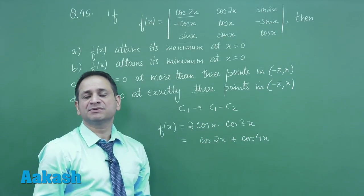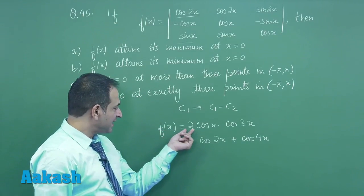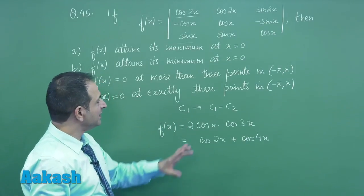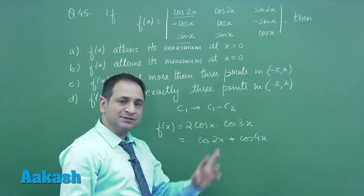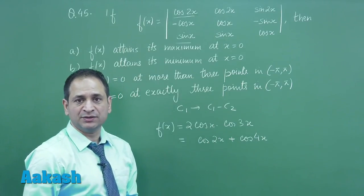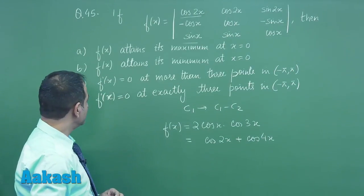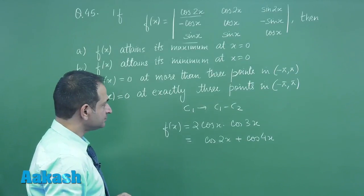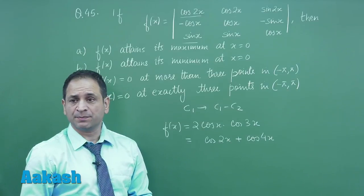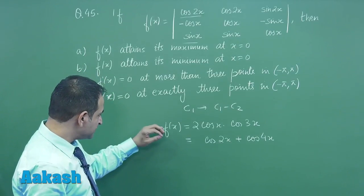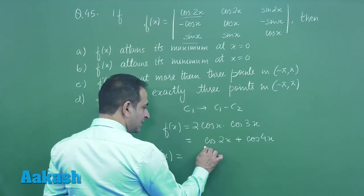This is also lying between minus 1 to 1, so f(x) will have the maximum value 2, which is definitely attained at x equal to 0. So by putting x equal to 0 you will be getting the maximum value. So option A is definitely correct. Now differentiating this, we have f'(x) at x equal to...